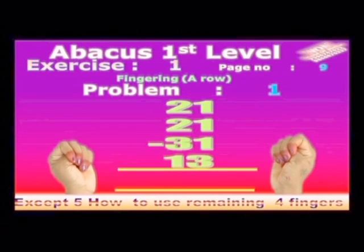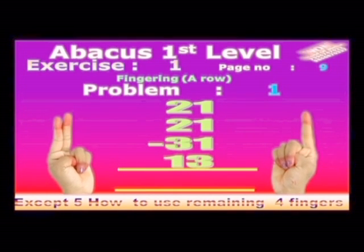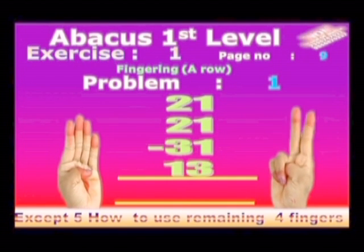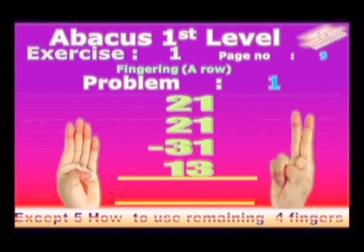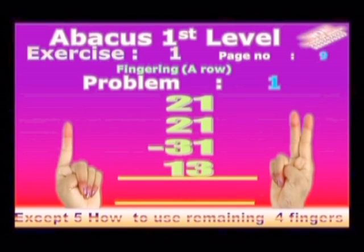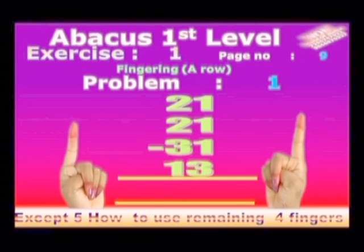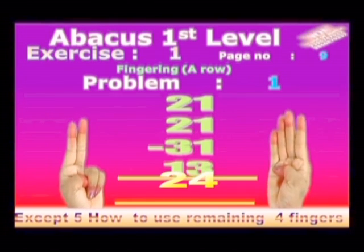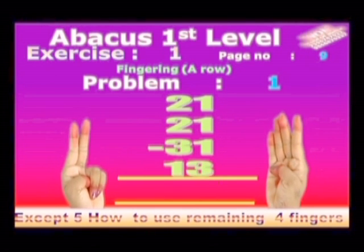Problem no. 1. Take 21: 2 in left hand and 1 in right hand. Add 21: 2 in left hand and 1 in right hand. Subtract 31: 3 in left hand and 1 in right hand. Add 13: 1 in left hand and 3 in right hand. Answer is 24.